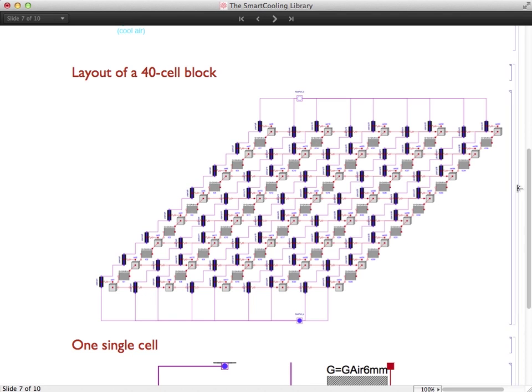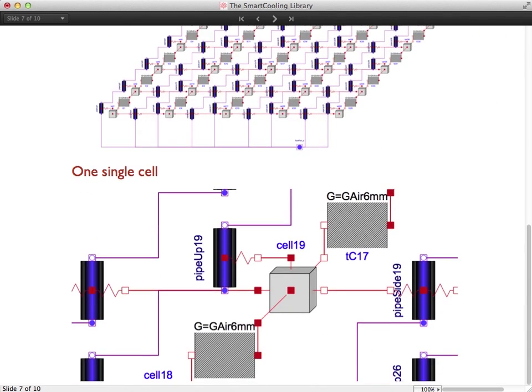If we zoom in and look at cell 19, we can see the connection to the pipes on both sides here. And the connection to the pipe that's above. To increase the fidelity of the model, there's also a thermal conducting material between each cell.